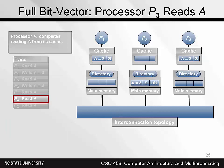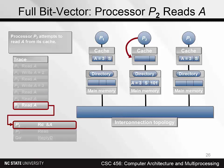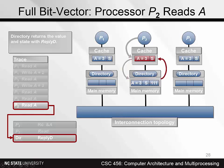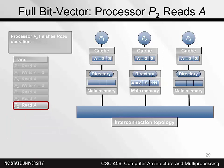Now P2 finally gets into the act by issuing a read for A. Since it's a cache miss, this requires a network transaction, namely a read. The state in main memory doesn't need to change, but the bitvector is updated to all ones. The directory issues a reply D transaction, replying with both the data and the state, which is S. The read operation is complete. Now all three caches have valid copies of the block in state S.